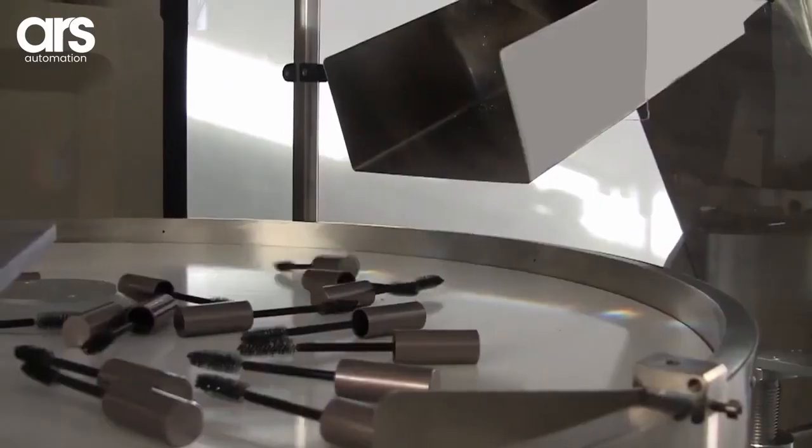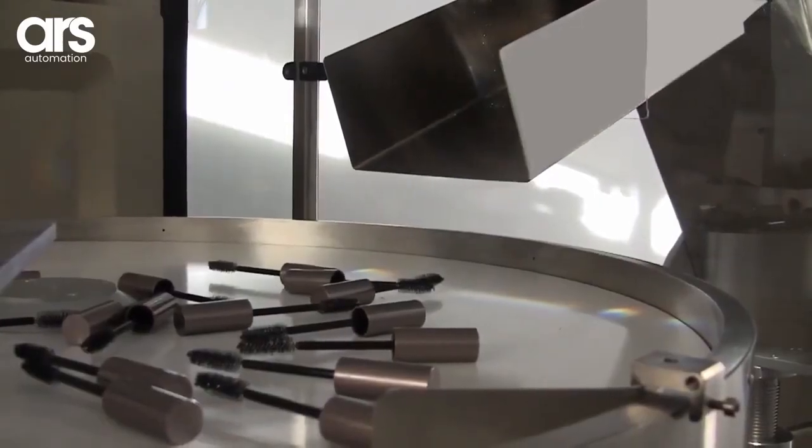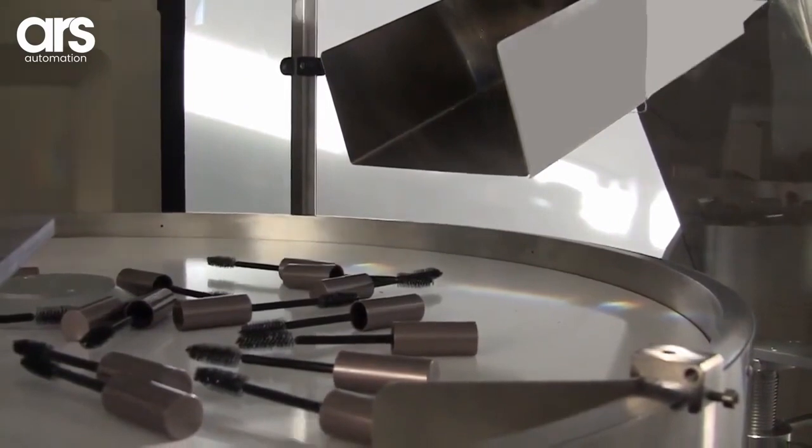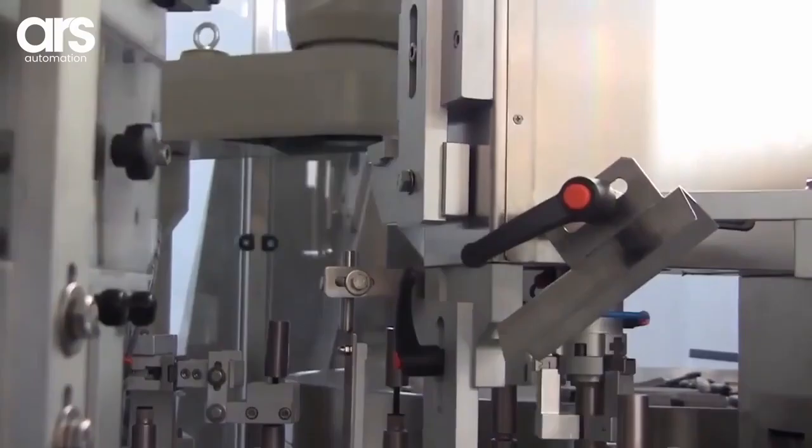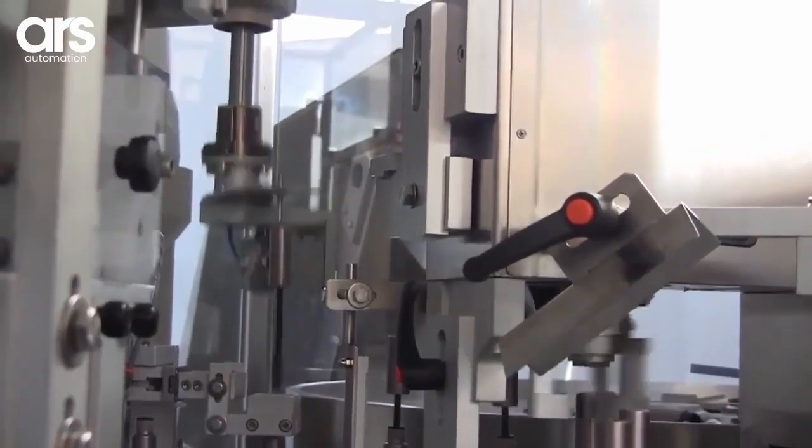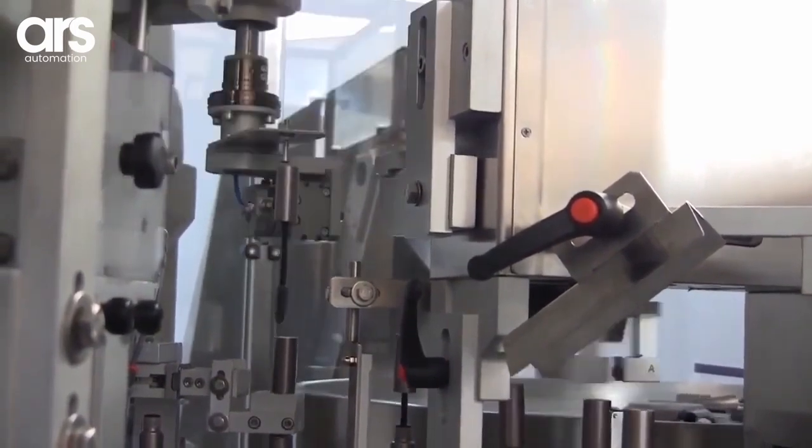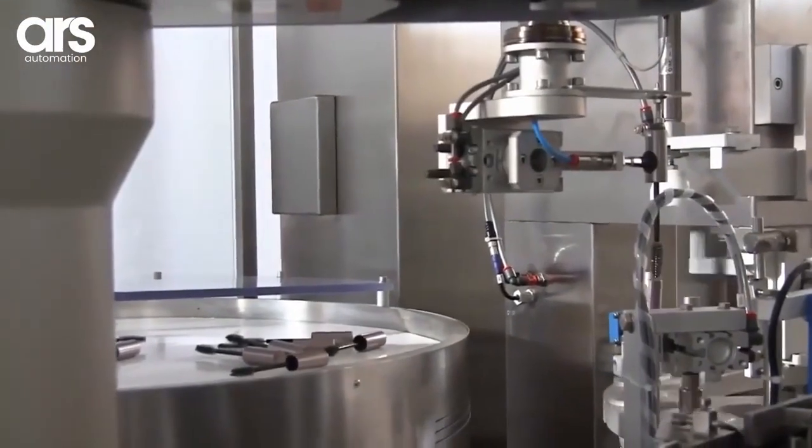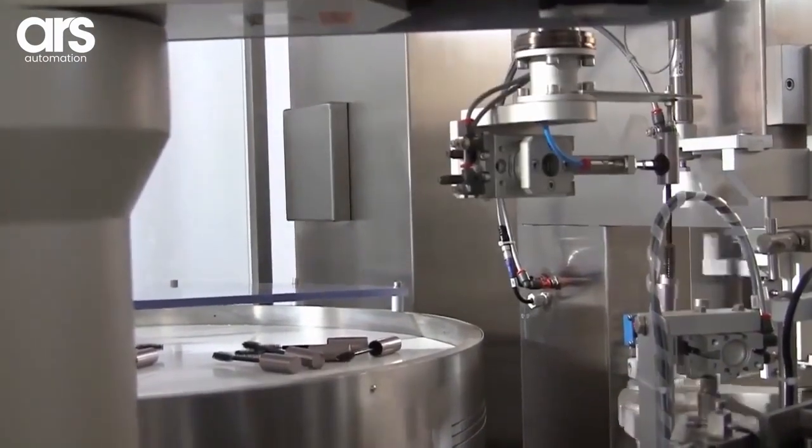In this case study, we will see the loading of a copying machine. Flexi-Bole feeds brushes to a SCAR robot that performs the pickup and, with a turning unit on the end of arm tooling, inserts them vertically into a deposit on the rotary table.